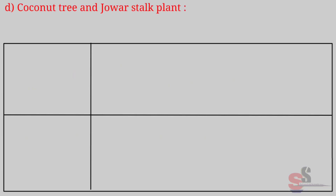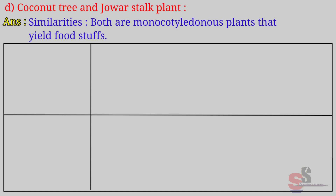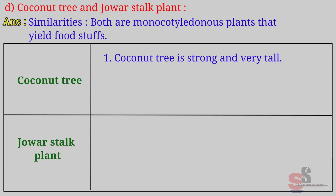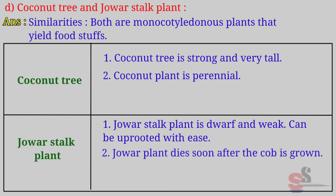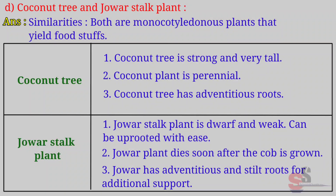D. Coconut tree and Jawar stalk plant. Similarities: Both are monocotyledonous plants that yield foodstuffs. Differences: Coconut tree is strong and very tall; Jawar stalk plant is rough and weak and can be uprooted with ease. Coconut plant is perennial; Jawar plant dies soon after the cob is grown. Coconut tree has adventitious roots; Jawar has adventitious and stilt roots for additional support.